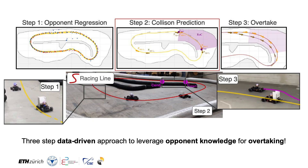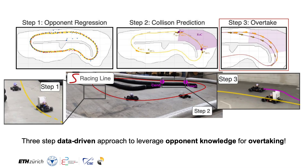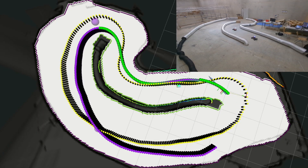With this, step two can be tackled. With the estimation of the future opponent trajectory, the region of collision can be computed as a track section confined between C-start and C-end. Now that a region of collision is estimated, an overtaking trajectory can be computed in the future section of the track.